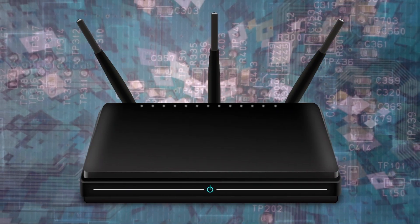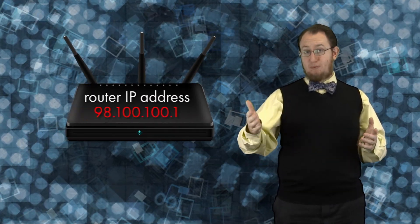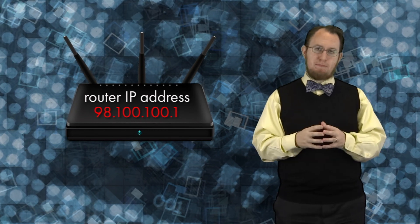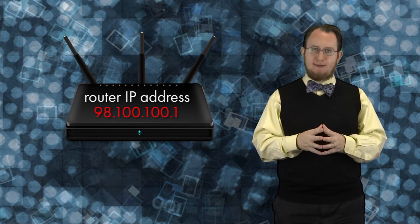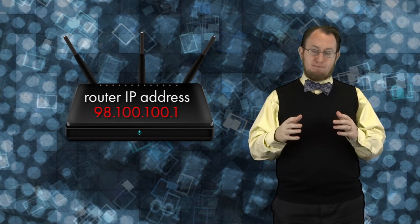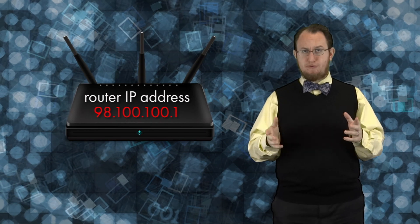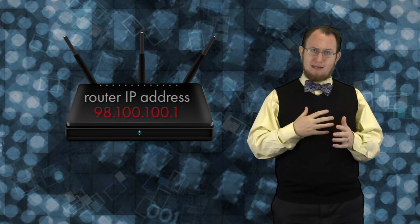In this case, my gateway is a router. So let's say my router has an IP address of 98.100.100.1. It has to be on my subnet, otherwise I can't send to it. Actually, my router has a bunch of different IP addresses, because it's attached to a bunch of different subnets, but 98.100.100.1 is the IP address that my computer knows it by.